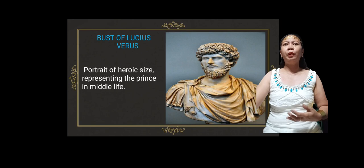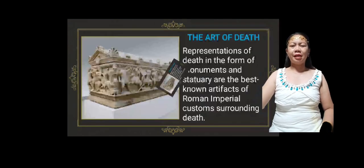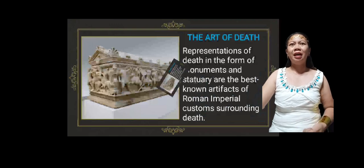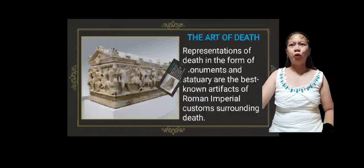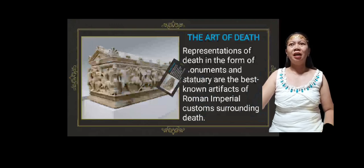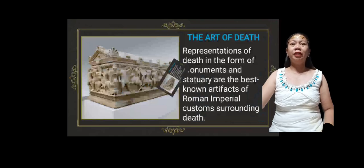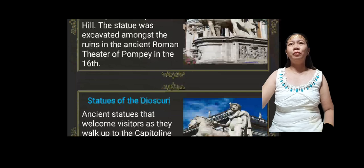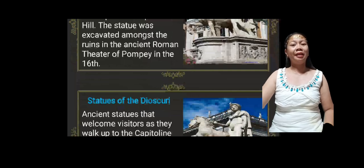The second sample of artwork is the Art of Death. Representations of death in the form of monuments and sculpture are the best-known artifacts of Roman imperial customs surrounding death. The funerary imagery permeated Roman culture and riddled the visual landscape. These static objects complemented a lively practice of parades and processions in honor of the deceased and his or her family. Another sample is the Statues of Castor, ancient statues that welcome visitors as they walk up the Capitoline Hill. The statue was excavated amongst the ruins in the ancient Roman theater of Pompeii in the 16th century.